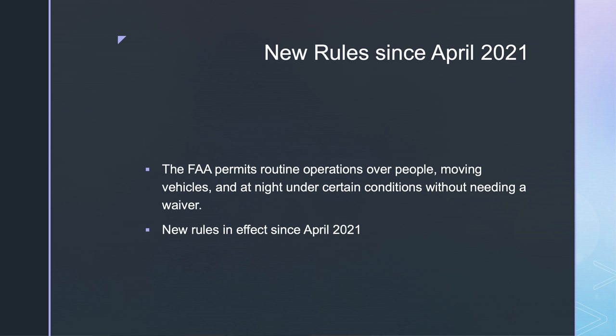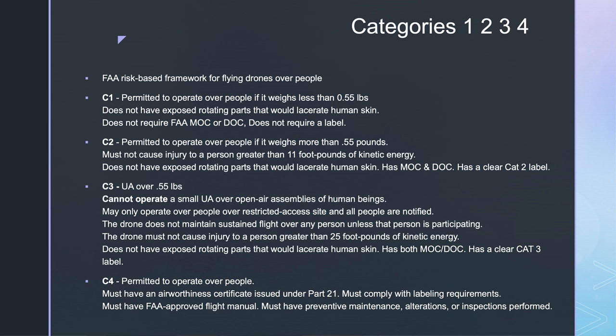A lot of rules have changed in April of 2021. So now the FAA permits routine operations over people, moving vehicles and at night under certain conditions without needing a waiver. These rules started in April 2021 and the information is coming out as we speak. Part of these new rules is the categories one, two, three, and four. The FAA risk-based framework for flying drones over people. In the past, you were not at all authorized to fly over people. Now you can, but it requires you to be in one of those categories. The questions were on my test. You will be tested on this.